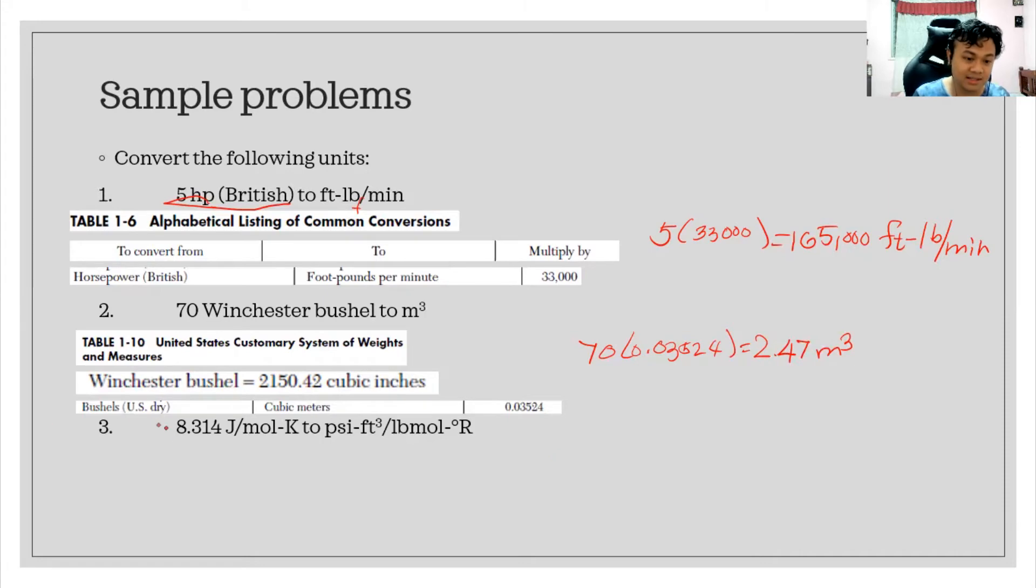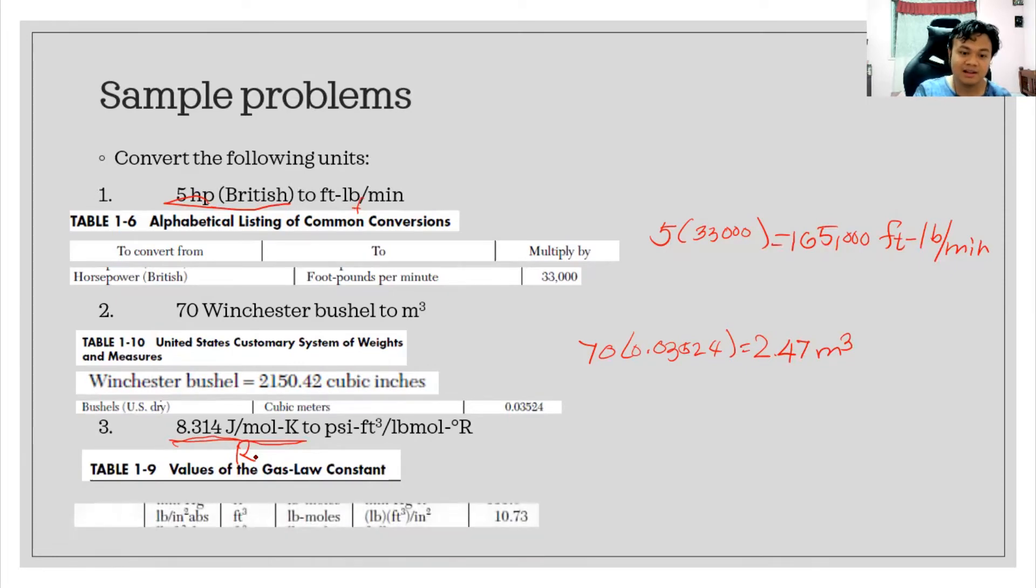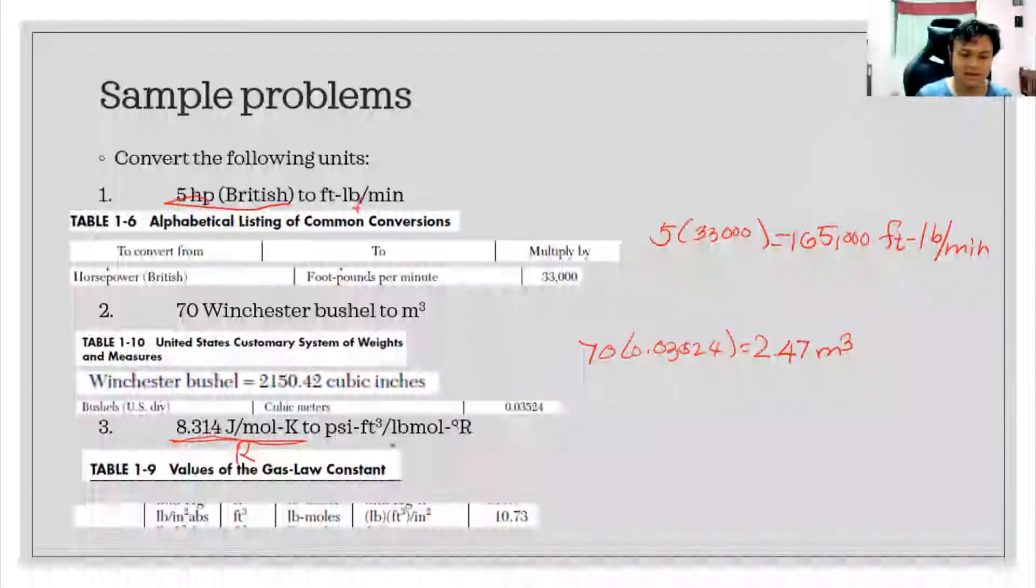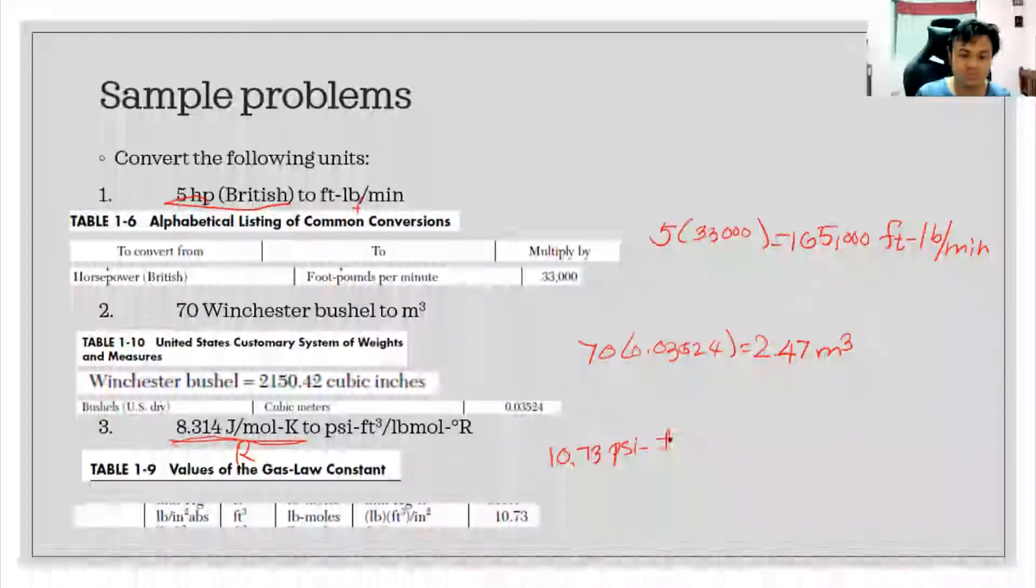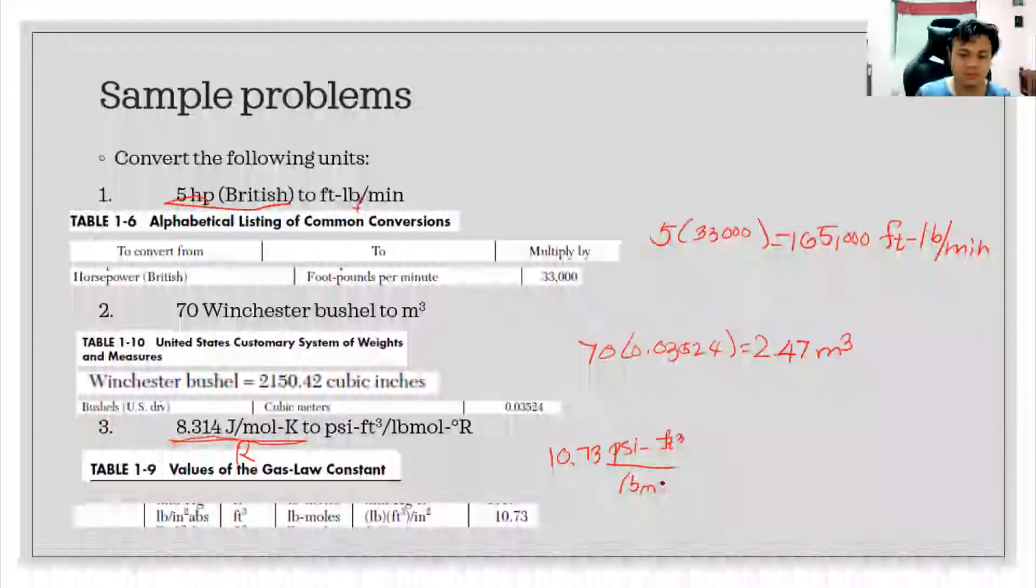For the last part: 8.314 joules per mole K to psi cubic feet per pound mole degree Rankine. If you can recognize this, it is the universal gas constant R. We have also universal gas constants R in our Perry's. It is found in table 1-9, values of the gas law constant. You can find there the exact value of 8.314 joules per mole. Just convert this to PSI cubic feet per pound mole degrees Rankine, it's just as simple as 10.758. So it's that simple.